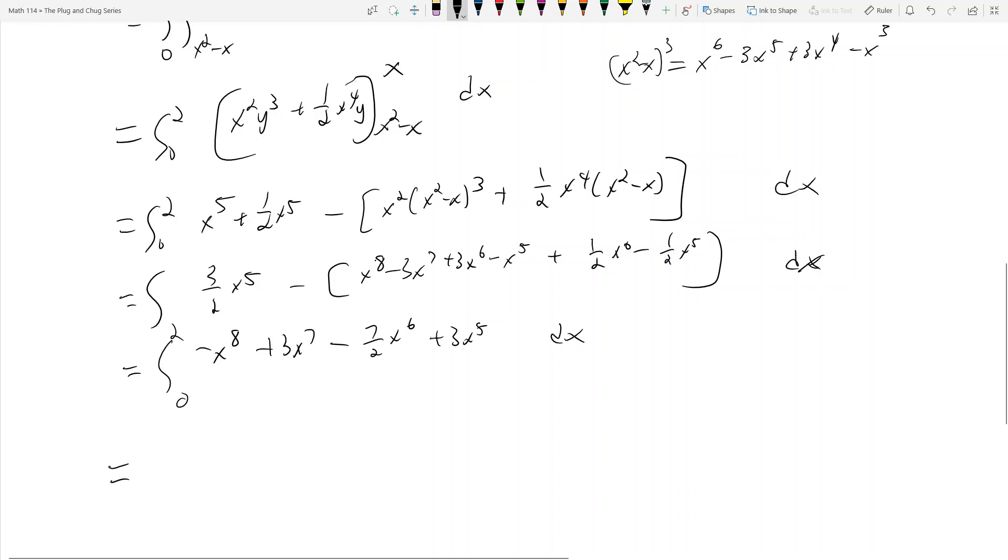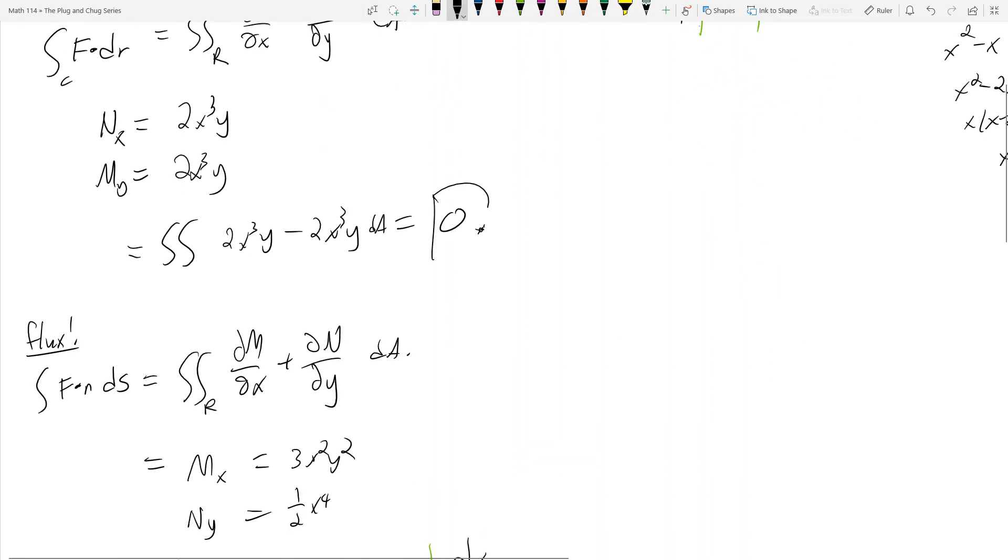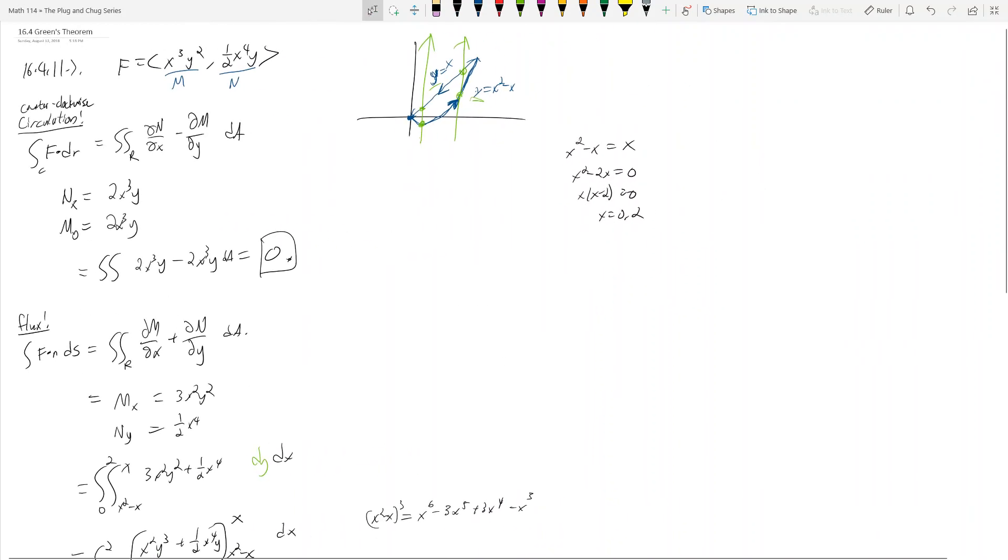That gets me negative x⁹ over 9 plus 3/8 x⁸ minus, isn't this fun, 7/12 x⁷ plus 1/2 x⁶, all evaluated from 0 to 2. What in the world is this? I have the book answer, and I know I have this integral correct. So this integral ends up being 64 over 9, which is the flux of this region right here. So the flow, the counterclockwise flow is 0, and the flux is 64 over 9.